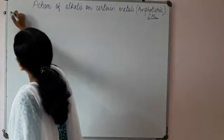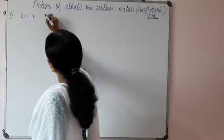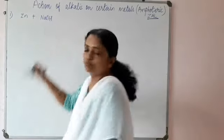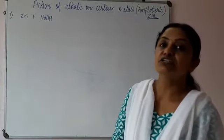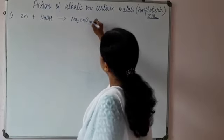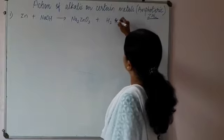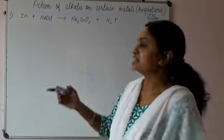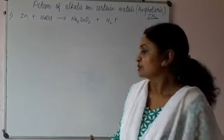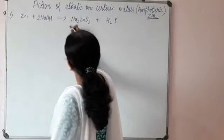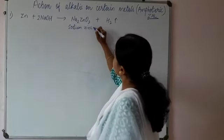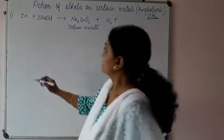First, we take zinc. When zinc reacts with an alkali, let's say sodium hydroxide — potassium hydroxide or sodium hydroxide can both be taken — we get a complex soluble salt, sodium zincate (Na₂ZnO₂), and hydrogen gas is liberated. The hydrogen gas is colourless and odourless, and will extinguish a burning splint with a pop sound.